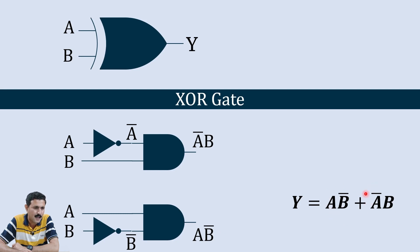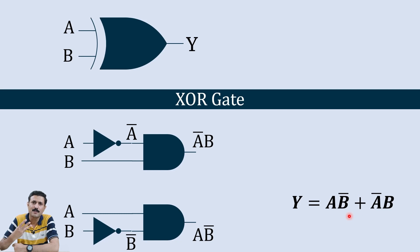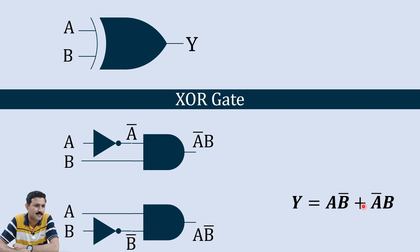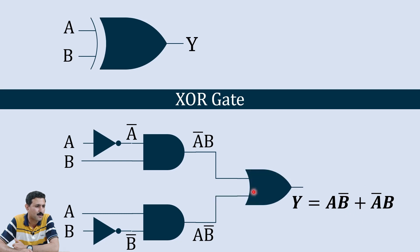Now we are supposed to add these two terms together. We have three options: AND gate, OR gate, and NOT gate. Which gate should we use for addition? Write the answer in the comments below. The correct answer is the OR gate. We use an OR gate to add the two inputs together and get output Y.